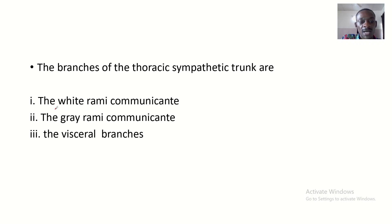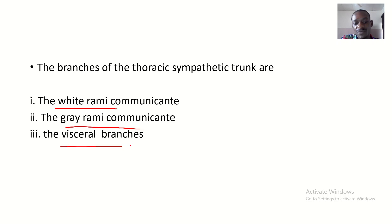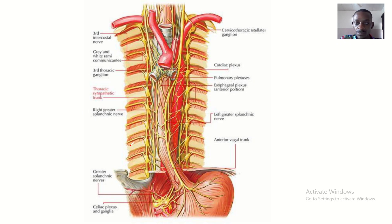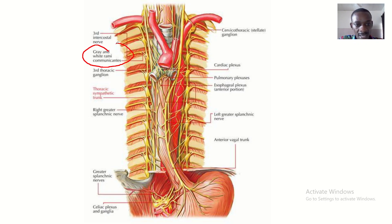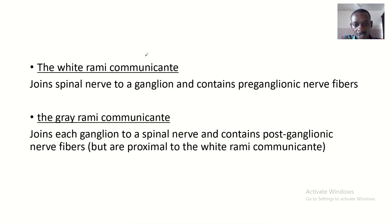The branches of the thoracic sympathetic trunk are: the white rami communicantes, the gray rami communicantes, and the visceral branches. Here you can see the white and gray rami communicantes right here.